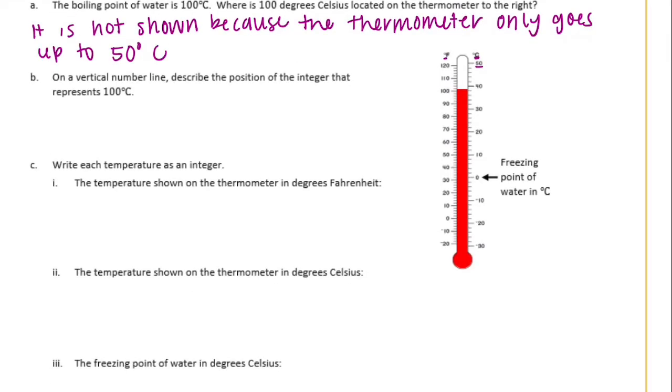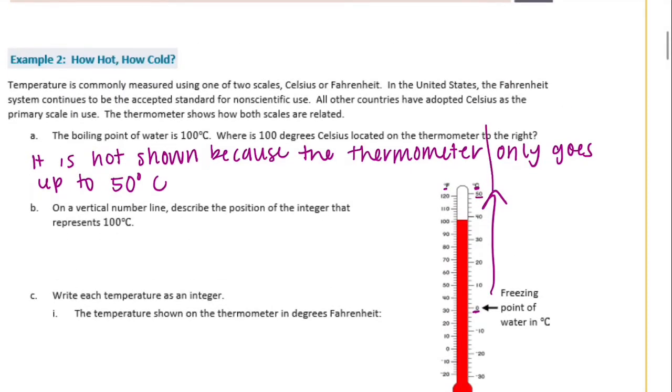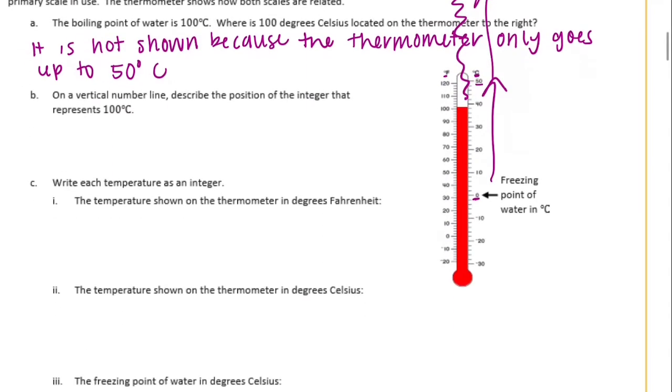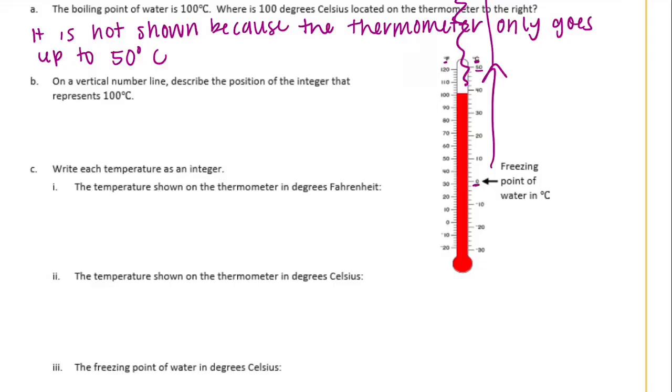Part B: on a vertical number line, describe the position of the integer that represents 100 degrees Celsius. So the integer, so if it were on here, it's asking where would it be? So it would be, we would start at zero and then go up all the way to, I don't know, 100 might be like around here, maybe. So we could say that the integer would be 100. It's positive because it is a positive number, and it would be 100 units above zero degrees Celsius.